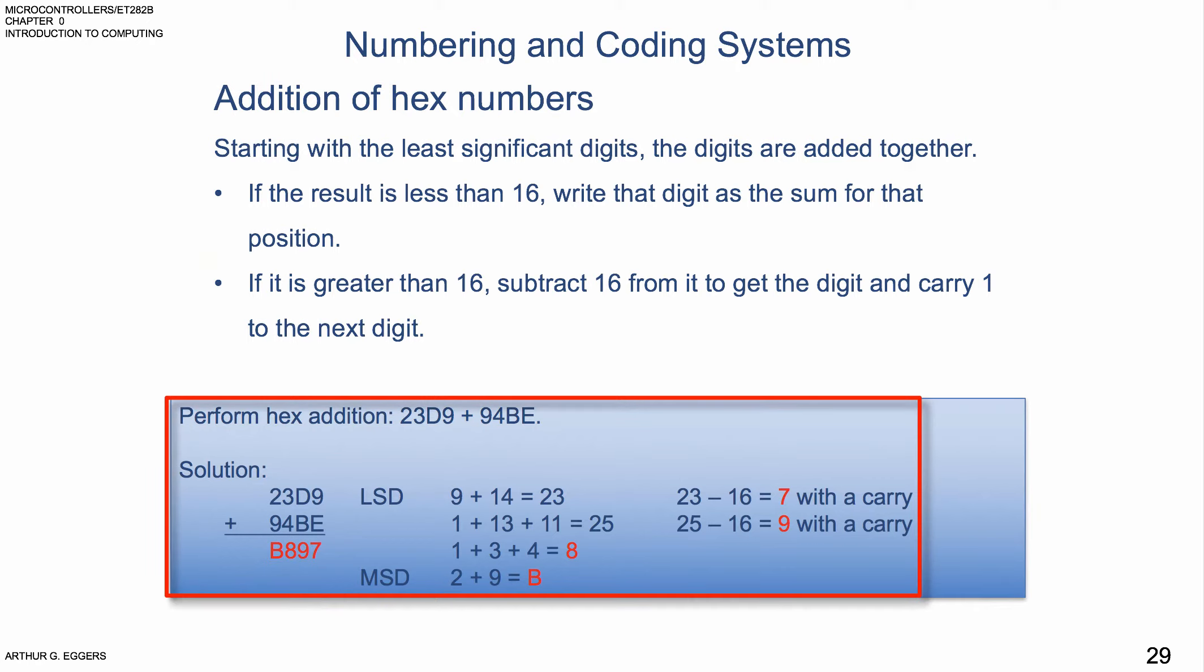Let's perform the hex addition of 23D9 added to 94BE. In the solution here you can see, we've done the math already, 23D9 plus 94BE gives us a value of B897. Let's see how that happened. In the least significant column, 9 and E, E being 14, we're going to add 9 and 14, we get 23. It's greater than 16, so we subtract 16 from 23 and what we end up with is a 7 with a carry.